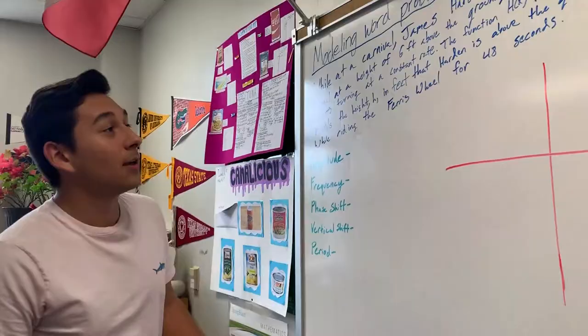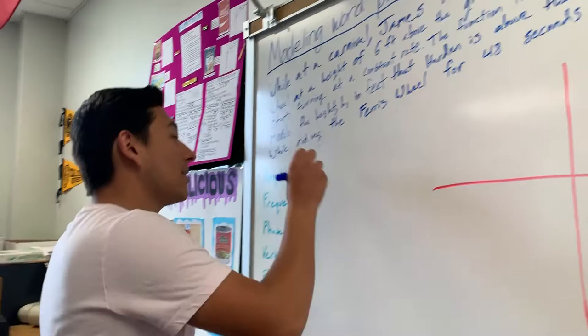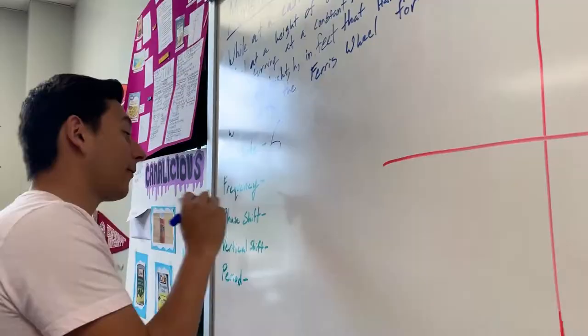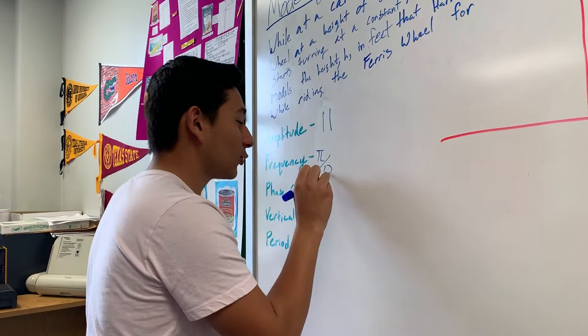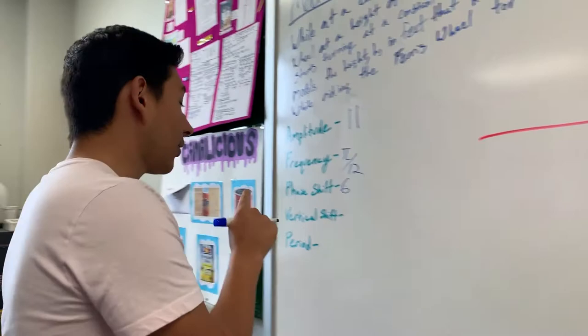So as we can see for our word problem here, our amplitude is going to be 11. Our frequency is going to be π over 12. Our phase shift is going to be 6. Our vertical shift is going to be 17, which is one of my favorite numbers.